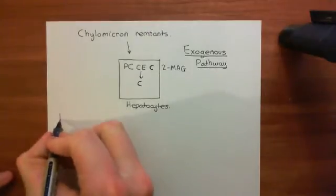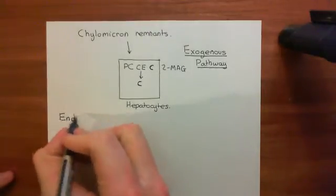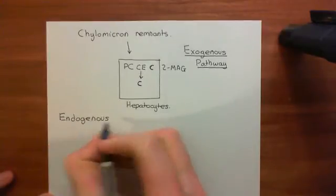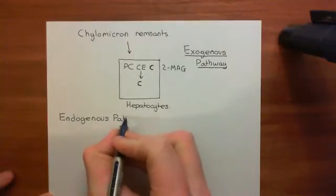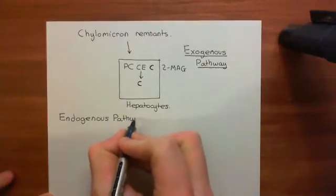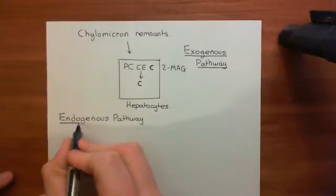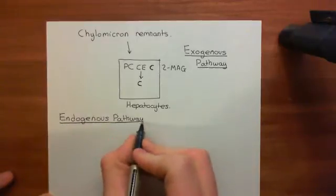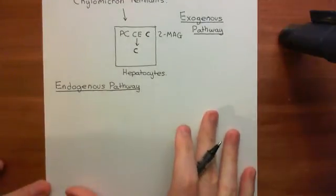This next pathway is called the endogenous pathway, because the source of the lipid molecules is now going to be an endogenous source rather than an exogenous source. This is how we're going to top up our supply of triacylglycerols to the cardiomyocytes in a fasted state.